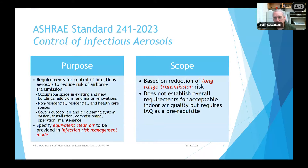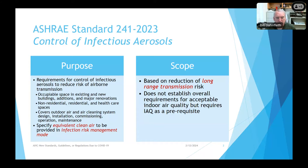The purpose and scope of the standard are the place to start. The purpose of 241 is to establish minimum requirements for controlling infectious aerosols to reduce risk of airborne transmission. It is now well accepted that airborne transmission is important not only for COVID-19, but for other diseases as well. It applies to occupiable space in all types of buildings, and not just to new buildings, but to renovations and additions. The focus is on outdoor air quantities and air cleaning system design, installation, commissioning, operation, and maintenance — so it's comprehensive in that respect, like other IAQ standards.